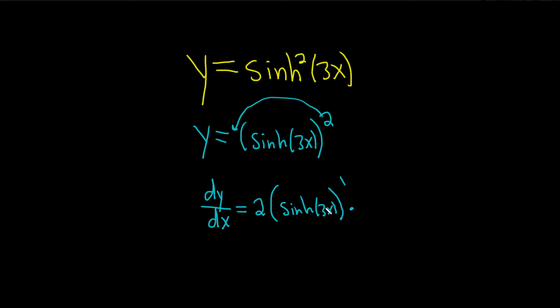And then times the derivative of the inside function. So the inside function here is sinh, so its derivative is cosh. It's a 1, by the way. So this is cosh of 3x.